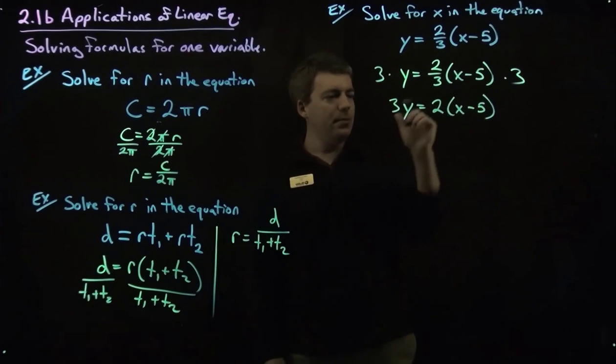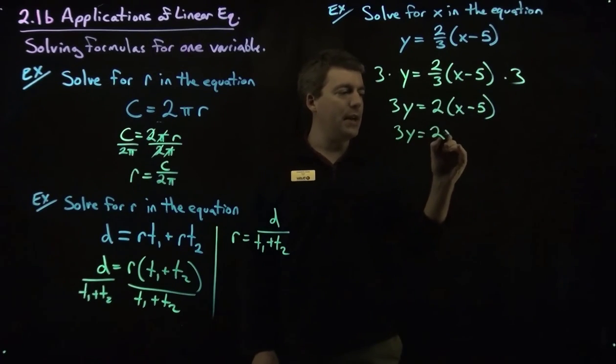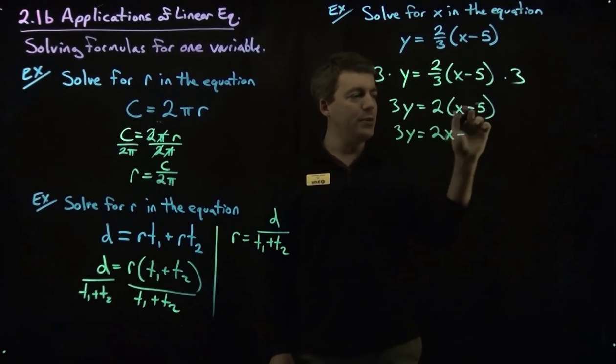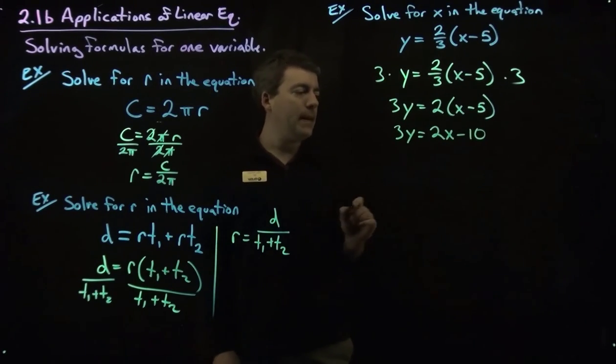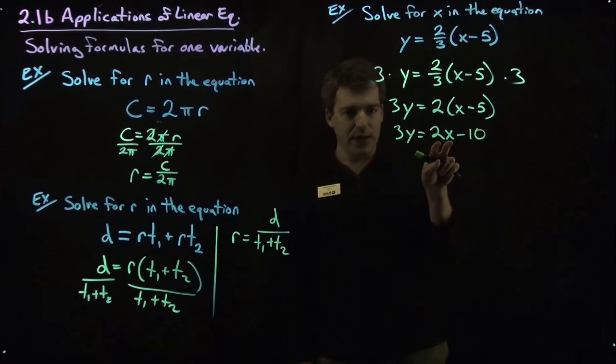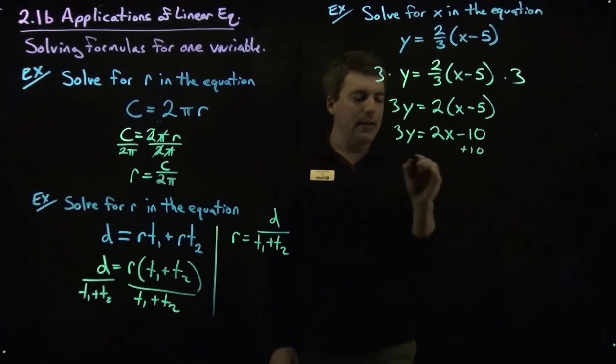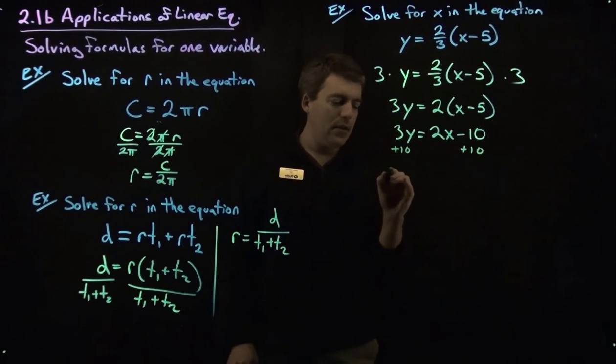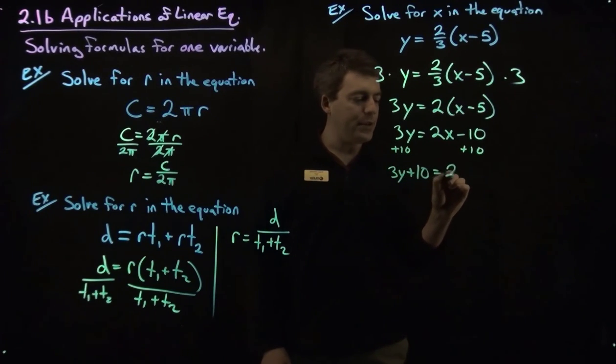Now let's go and distribute this 2. We've got 3y equals 2 times x minus 2 times 5, which is 10. And now we can work towards getting this term with an x by itself. So we'll add 10. So 3y plus 10 equals 2x.